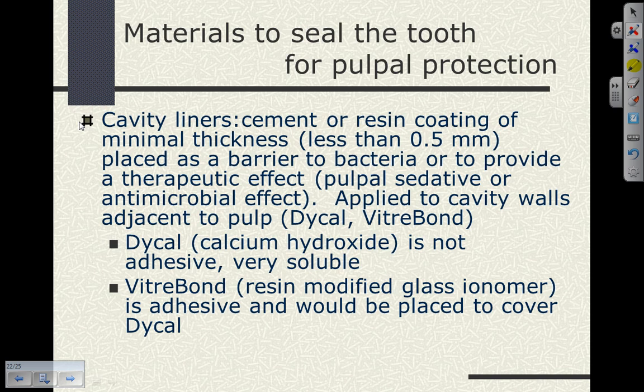Cavity liners, by definition, are cements or resin coatings of minimal thickness — generally less than half a millimeter — placed as a barrier to bacteria to provide a therapeutic, pulpal sedative, or antimicrobial effect on cavity walls adjacent to the pulp. Examples include Dical (calcium hydroxide) — not adhesive, very soluble, placed in deep cavity preparations — and Vitrobond, a resin-modified glass ionomer which is adhesive. We would always place Vitrobond to cover Dical when Dical is placed in the cavity preparation.